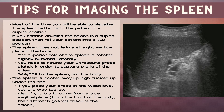Now let's talk about some tips for imaging the spleen. Most of the time you'll be able to visualize the spleen better with the patient in a supine position. If not, roll the patient into a right lateral decubitus position. Remember the spleen does not lie in a straight vertical plane — the superior pole is rotated slightly outward or laterally, so rotate the ultrasound probe slightly to capture the longest lie. It's sagittal and coronal to the spleen itself, not the body.